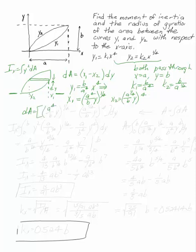So dA is a to the fourth over b, y minus a to the one-fourth over b, y to the fourth power. I can take that integral, ix is the integral from zero to b of y squared of my dA.